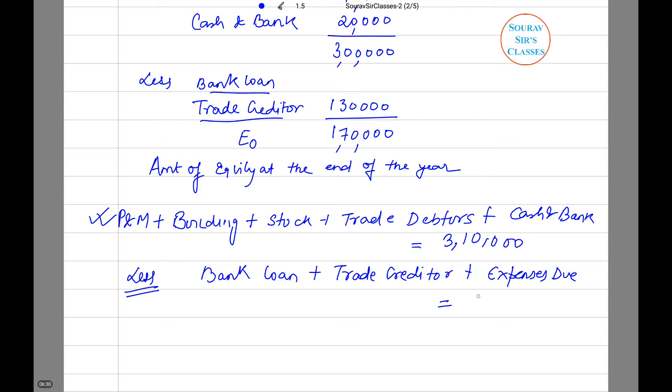If you add all these items you will get 1 lakh 10,000. So this is asset, this is liability, so equity or E1 will be 2 lakh rupees. Now we will find out if E1 is greater than E0. If this figure is in plus, then it's a profit. This is 2 lakhs, this is 1 lakh 70,000, so it is definitely a positive figure which is 30,000, so there is a profit.